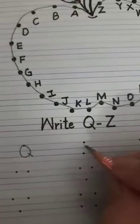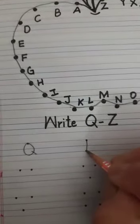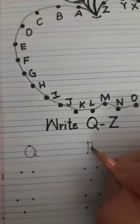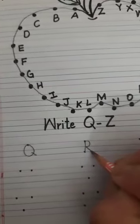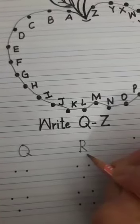Q ke baad kya aata hai? Alphabet R. Standing line. P ki formation banayenge. Yahaan se blue line tuk slanting line banayenge. This is alphabet R.